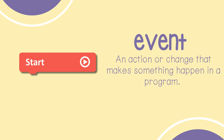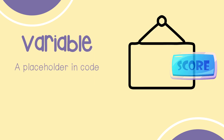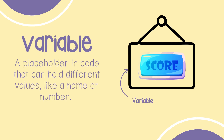An event is an action or change that makes something happen in a program. A variable is a placeholder in code that can hold different values like a name or a number.